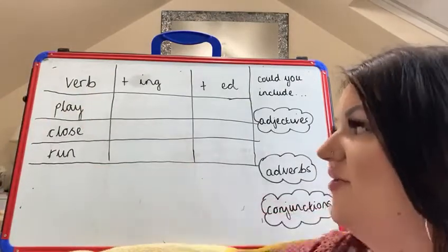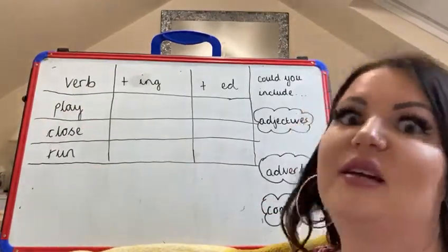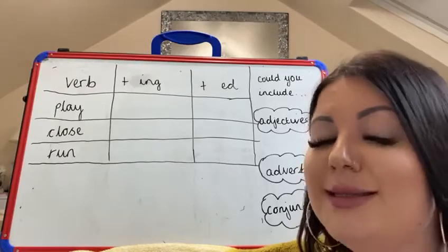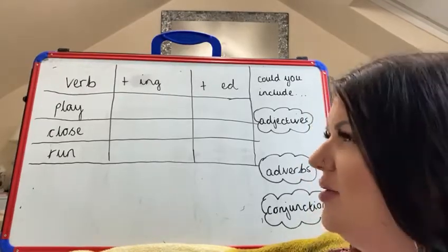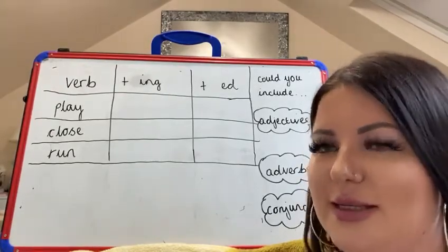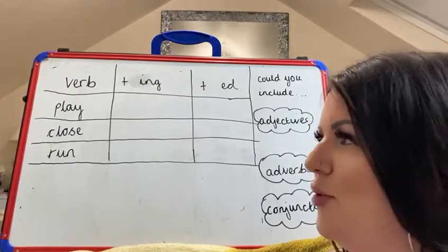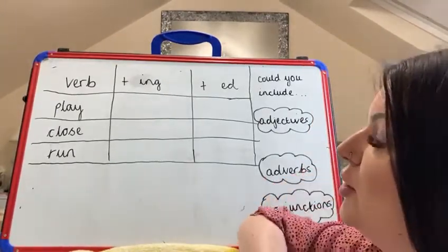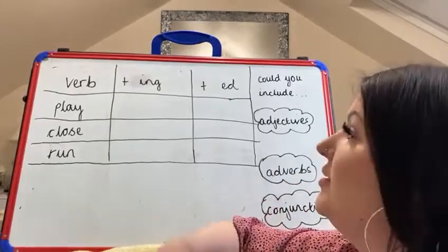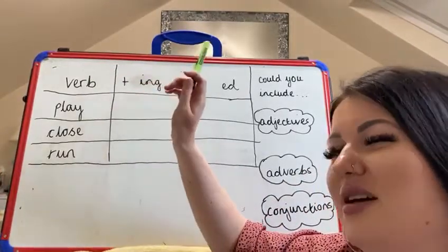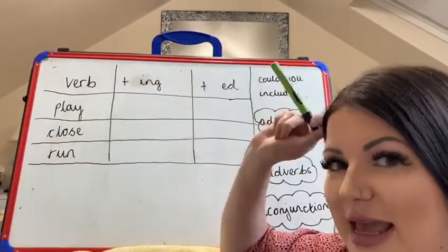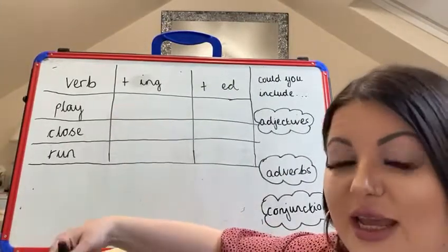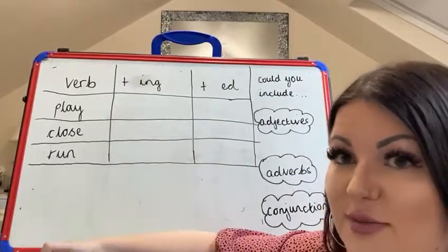I could just very simply write, 'I like to play outside.' That is a sentence — a simple sentence and it makes sense. But I'd like to make my sentence a bit more interesting and give it a bit more context. So what I could do to my verbs is add a suffix. The suffix goes at the end of a verb, and depending on what you've added, it will change the meaning of the verb.